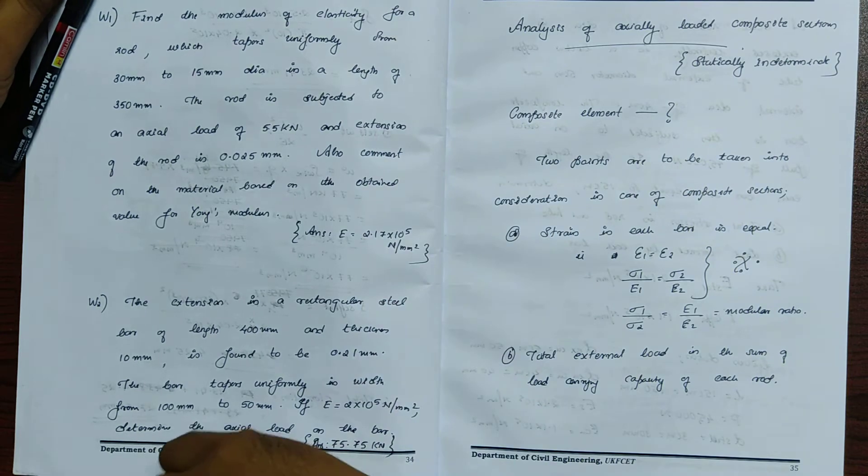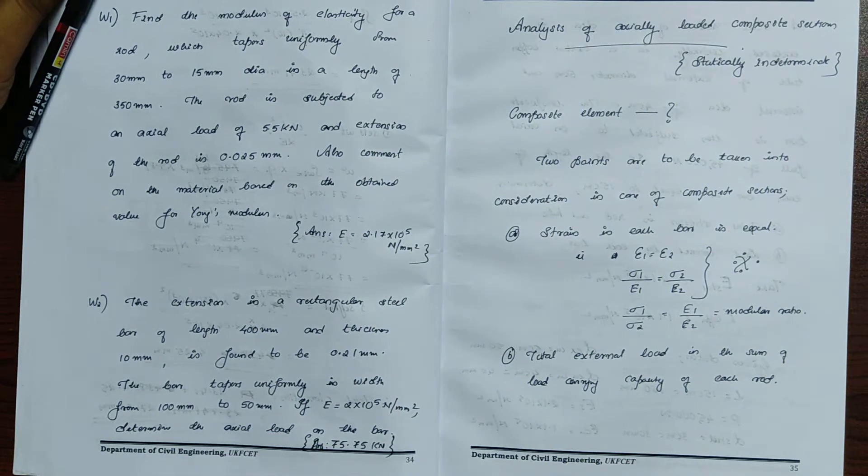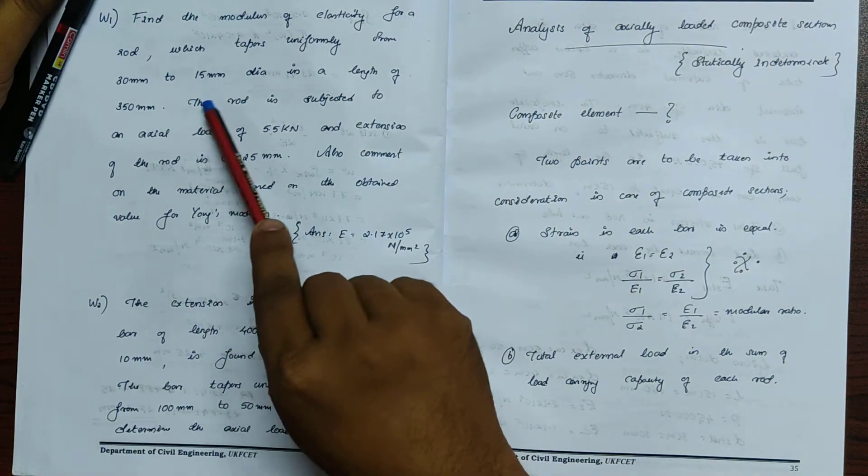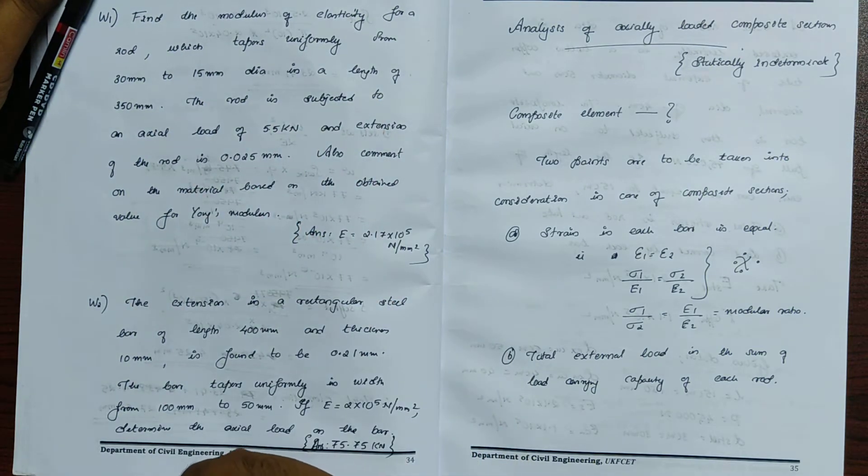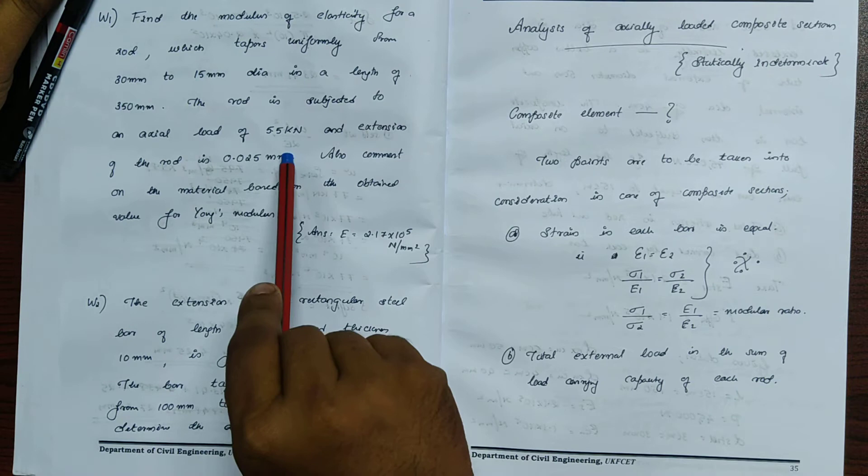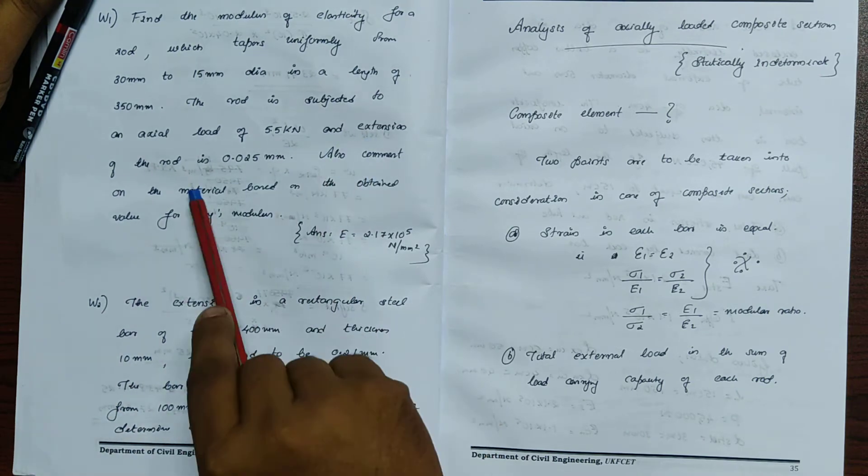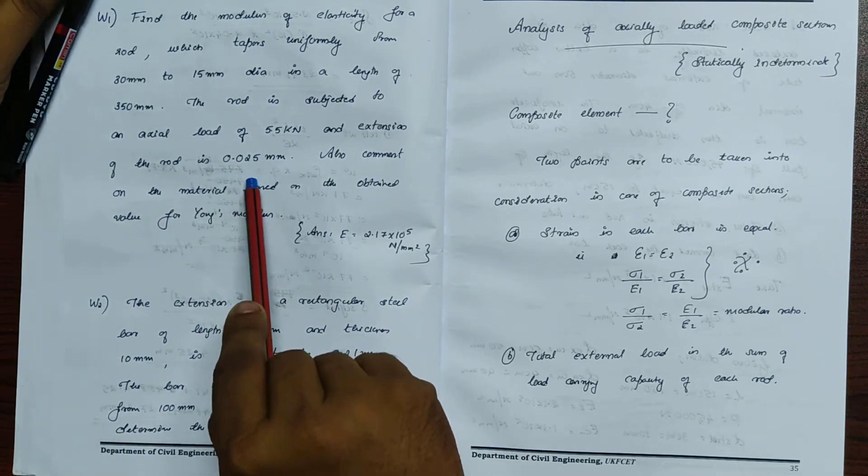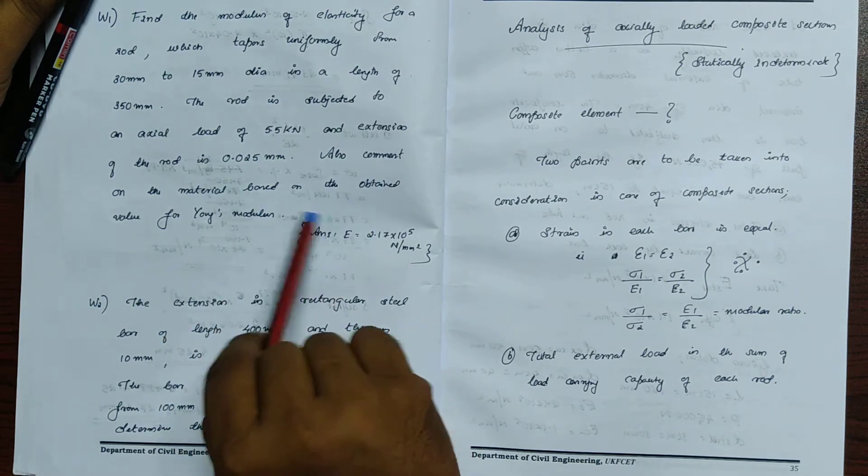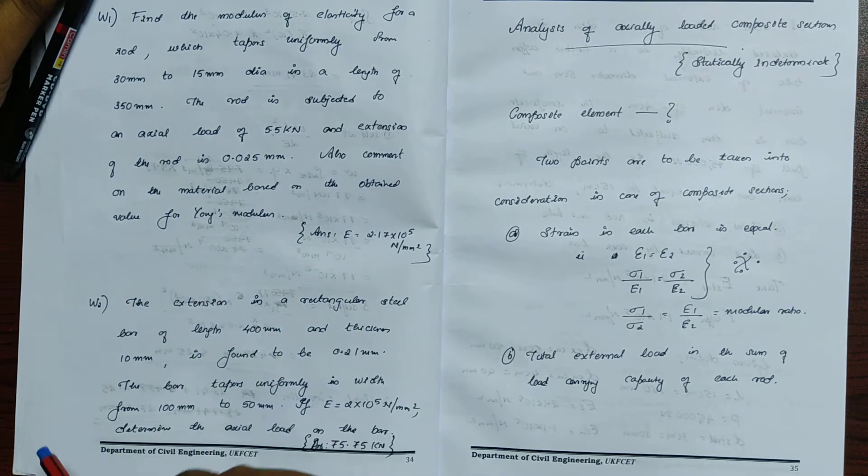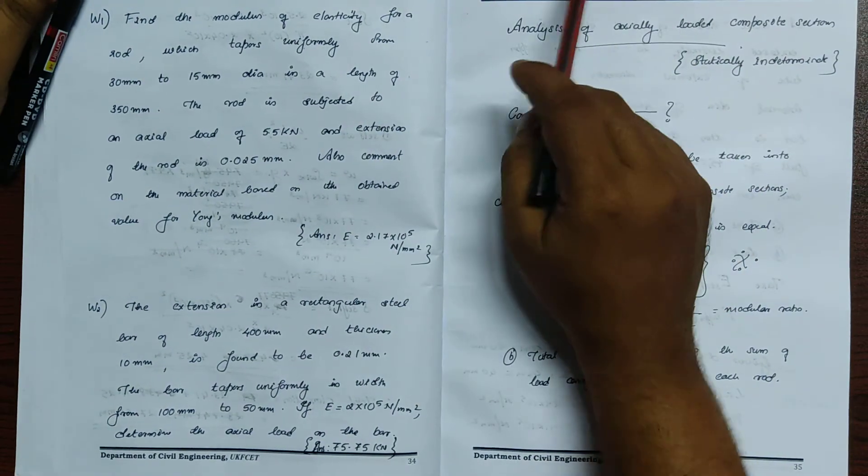Find the modulus of elasticity for a rod which tapers uniformly from 30mm to 50mm diameter in a length of 350mm. The rod is subjected to an axial load of 5.5 kilonewton and extension of rod is 0.025mm.